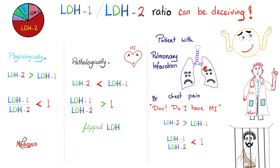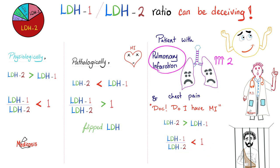Important caveat: imagine a patient with pulmonary infarction and chest pain. You see LDH2 is greater than LDH1 — normal ratio — and you tell the patient no heart attack. But wait: the lung has LDH2 and LDH3. So LDH2 will be high due to lung infarction. Even if the patient also has myocardial infarction and LDH1 is elevated, LDH2 could still be greater than LDH1.